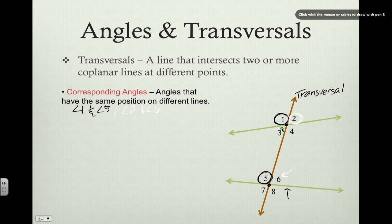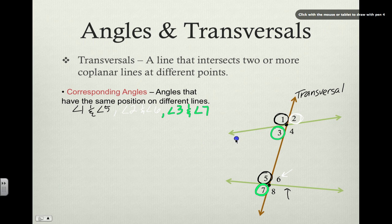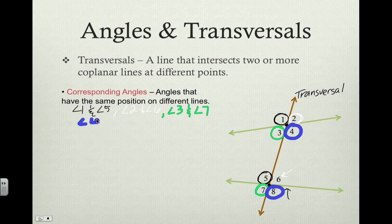Looking down here, we've got angle three, which is in the bottom left-hand corner. The corresponding angle to angle three would be angle seven, so we have angle three and angle seven. And then lastly, we've got angle four and angle eight — that would be our last corresponding angle pair. So those are our four different pairs of corresponding angles with this transversal intersecting the two lines.